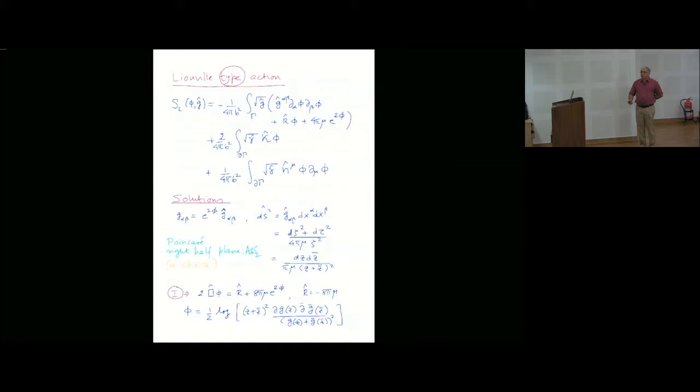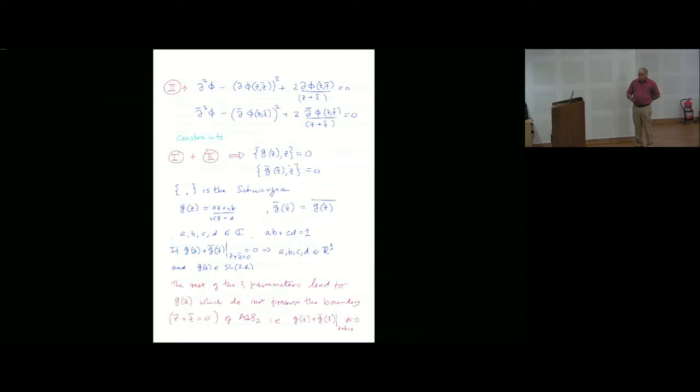Then I learned how to solve the Liouville equation actually, given this background. The trick is, this is a very well known way of doing it. You get the solution, the most general solution of the Liouville equation is given by this, where G of Z is some holomorphic function. Now what? But the phi must also satisfy these two constraints. If I substitute this solution into these constraints, then this function G of Z, which looks very arbitrary, must satisfy these two equations.